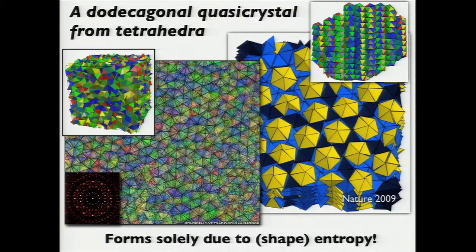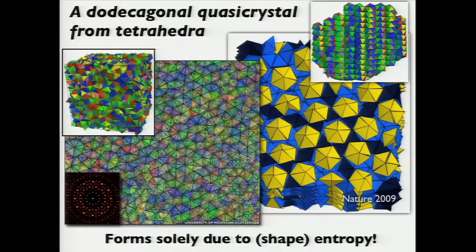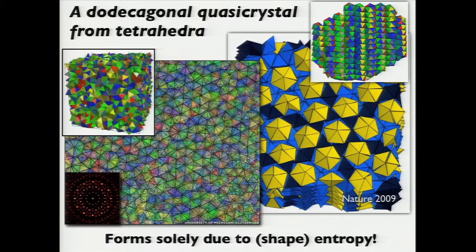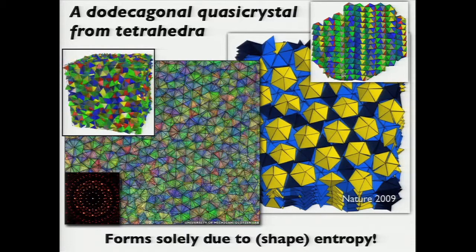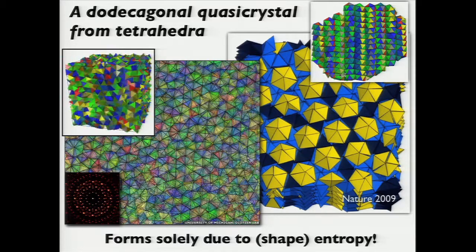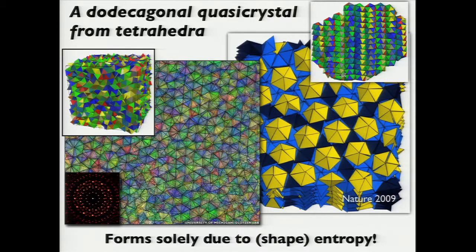We ran a Monte Carlo simulation on tetrahedra with no idea what to expect, and out came a really complicated structure we identified as a 12-fold rotationally symmetric quasicrystal. Quasicrystals are among the most complex structures possible; Dan Shechtman's 1984 discovery was celebrated with the Nobel Prize in Chemistry in 2011. They're mostly found in metals, with a handful found in soft-matter micellar systems. We never expected to see one here. It's the first example of a quasicrystal formed solely through entropy and no other interactions — with long-range rotational symmetry but no long-range translational order.